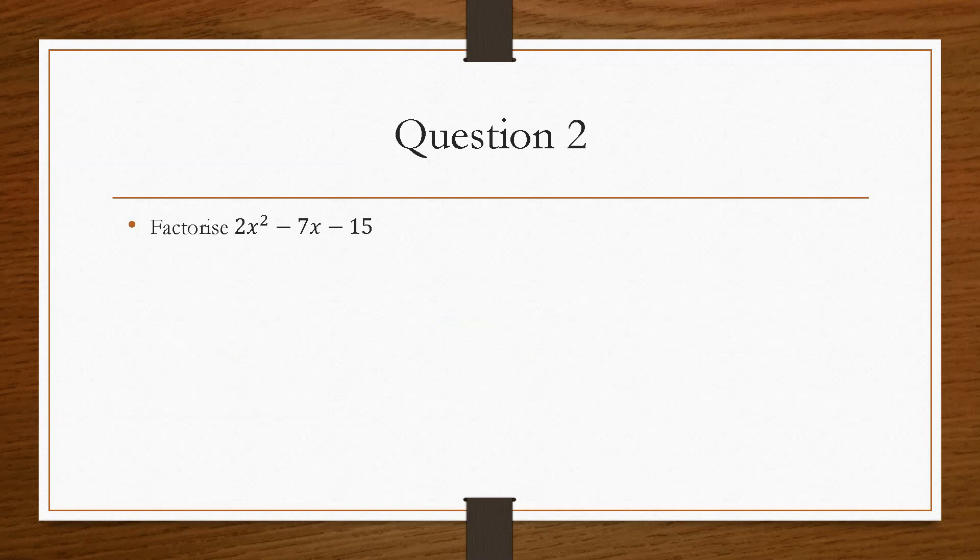Now we'll take a look at a second example, the only difference being that there is a number 2 here. When you have values in front of the x squared term, this is where it can cause a lot of problems. In the last example, it didn't matter where we put the 4 and the 2. We could have put them the other way around. However, this time, it's going to be a little bit more tricky. So it's the same thing as before, we'll draw our two empty brackets, we'll draw our cross.